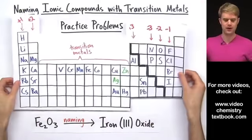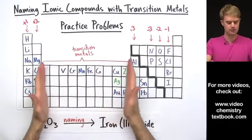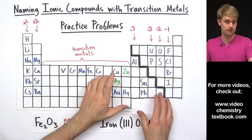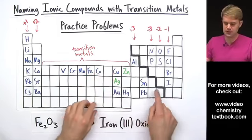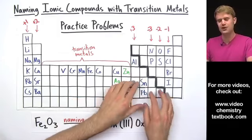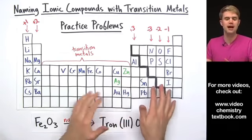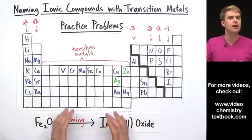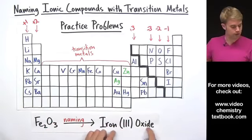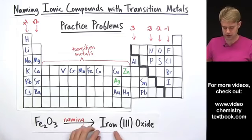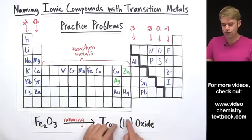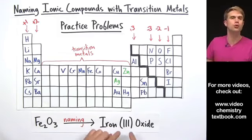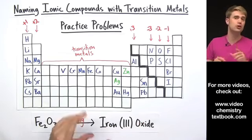The transition metals are the elements in this part of the periodic table here, and I've written in some of the most common. I'm also going to be talking about some of the metals over here which are not technically transition metals but act a lot like the transition metals in certain ways. When we write the names for formulas that contain transition metals, those names often have Roman numerals in them, and we've got to figure out what Roman numeral to put there.